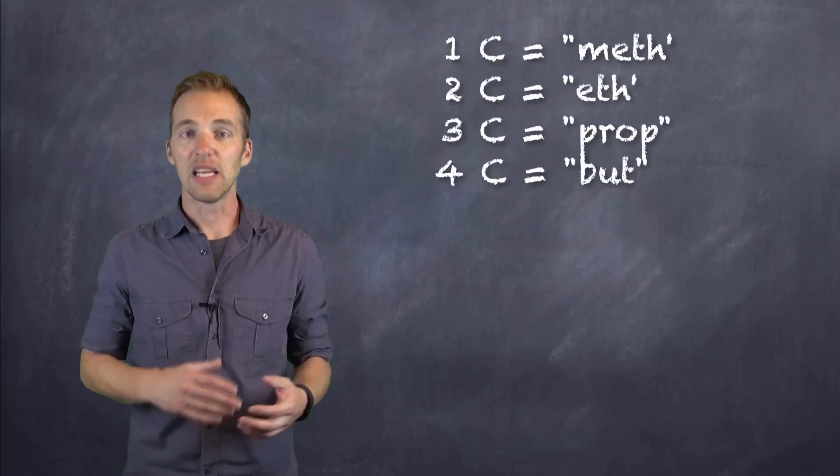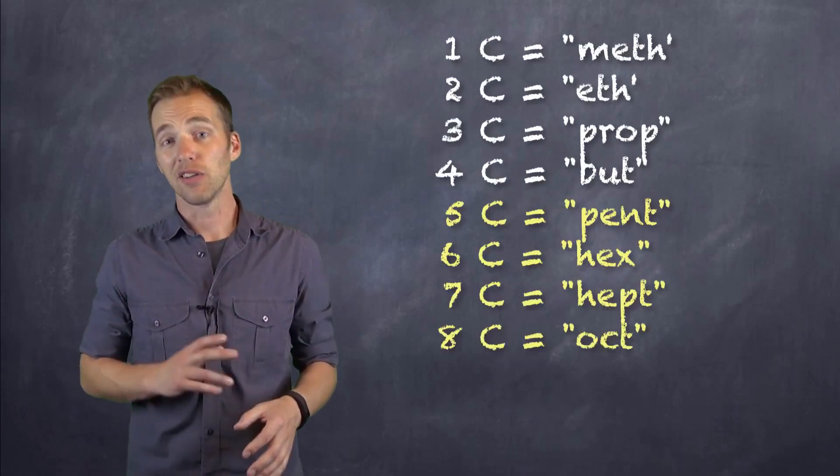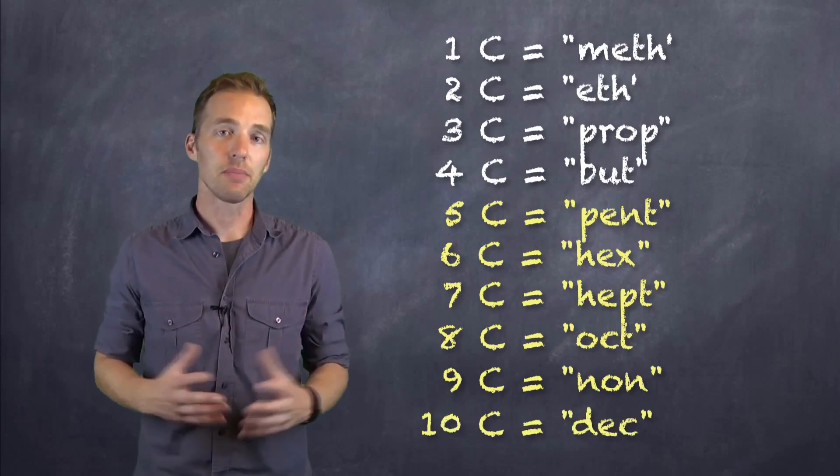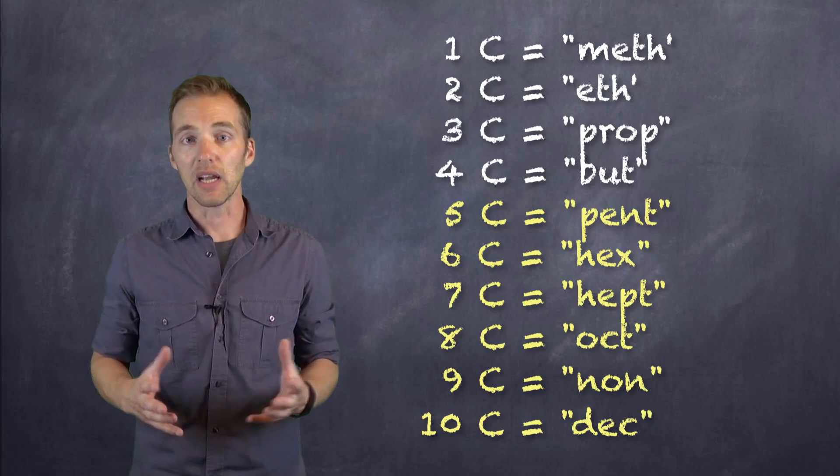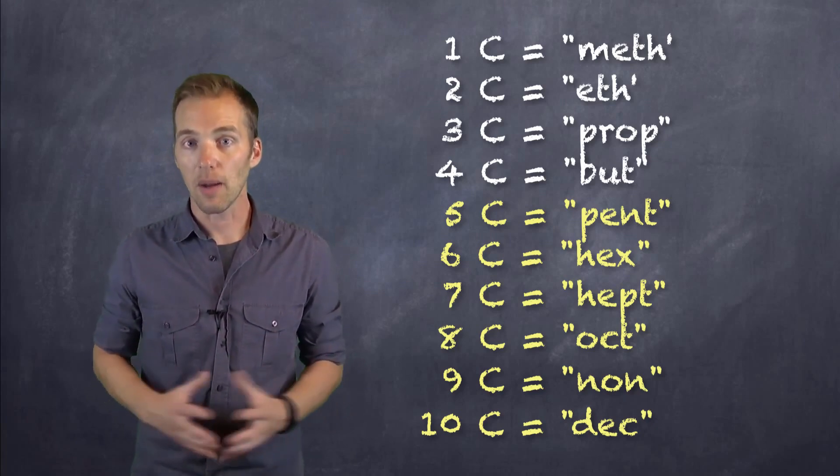After that, the pent, hex, hept, oct, non, dec would be very similar to those you would come across when naming inorganic compounds like hydrates or molecular compounds. We can use those to identify the total number of carbons we have in that chain.